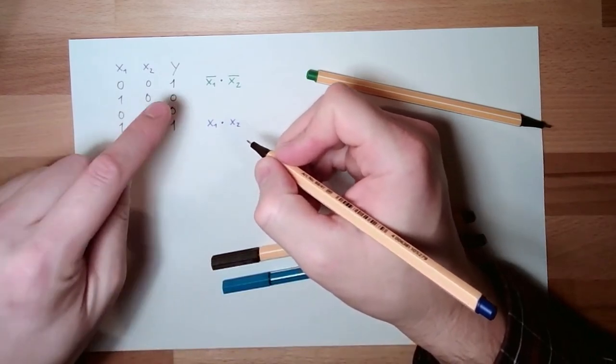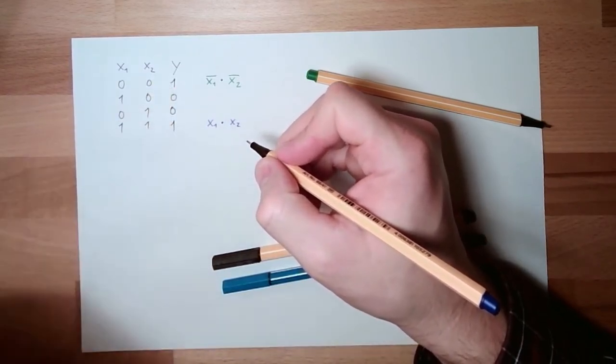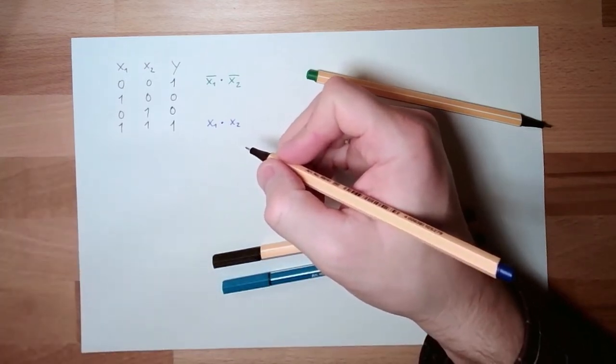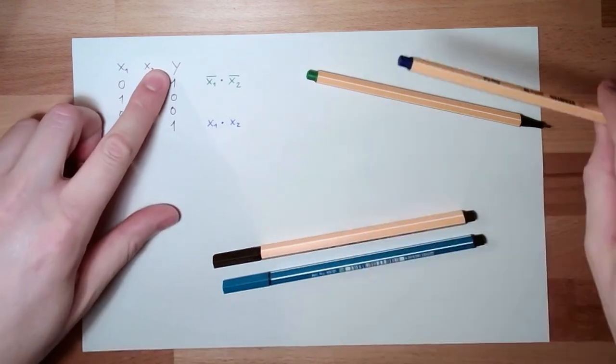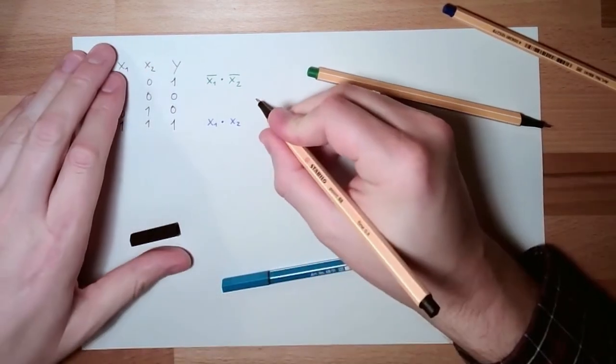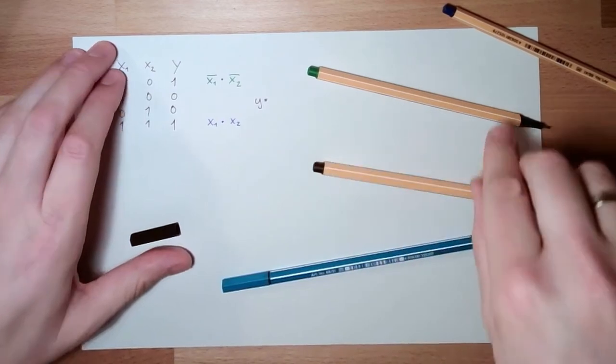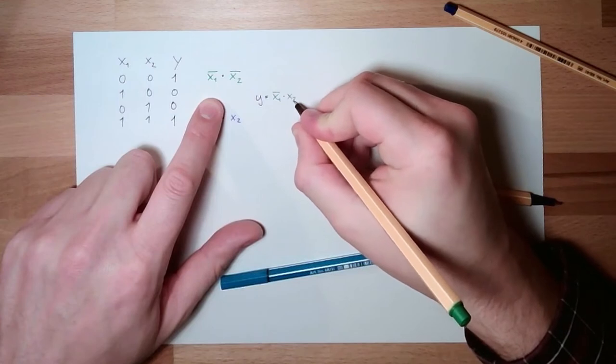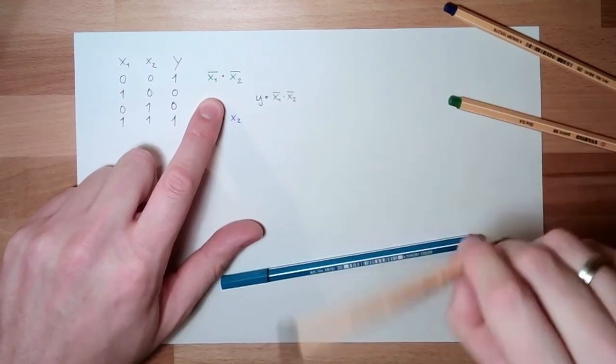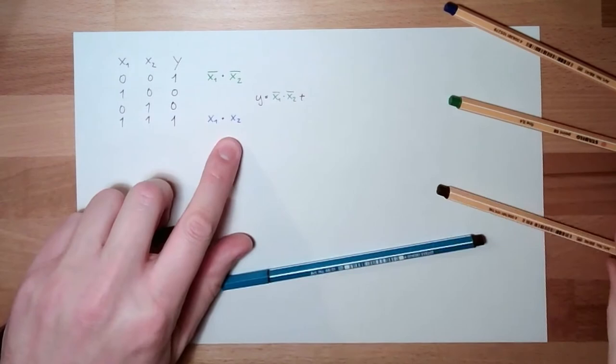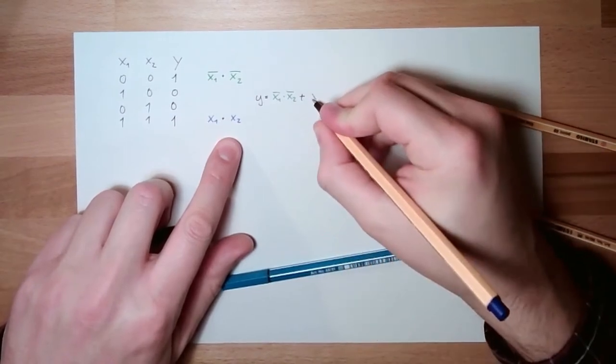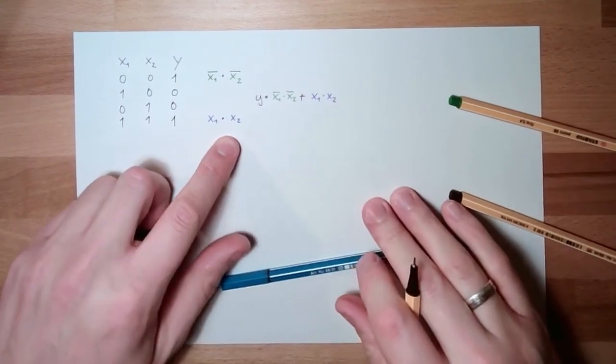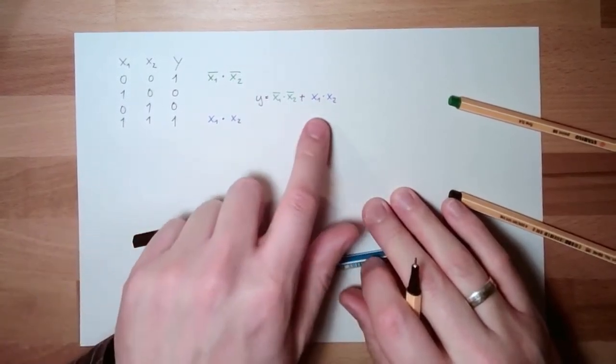And if either this line or this line is met, then I have my Y. So my Y, my output, is this part, x1, not x1, and not x2, or this part, x1 and x2. This is actually the equation of the equivalent.